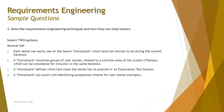Question number two: describe the requirements engineering techniques and how they can help testers. The question is straightforward but the options are detailed, requiring you to analyze and understand the theory behind each. Option A states: 'Each tester can easily see on the team's storyboard which task he or she has to do during the current iteration.' Recalling from the first tutorial, a storyboard is not an agile task board or Kanban board — it's a pictorial presentation of the application. So option A can be ruled out.